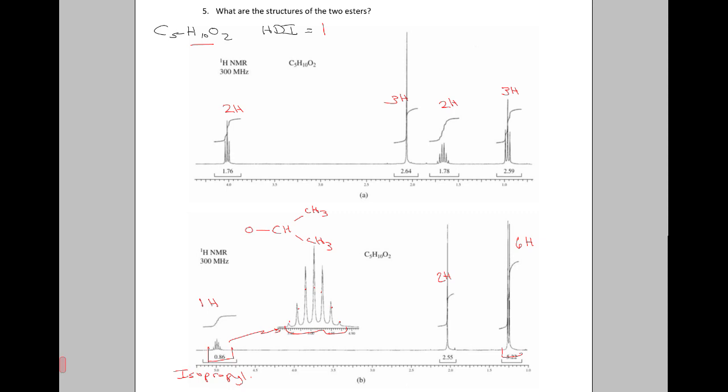If you remember when we looked at estimating chemical shifts for protons, this proton here, that methine, how would we determine that? We'd say, well, a methine we start with 1.7, and since it's next to an oxygen from an ester, we would add 3, which would give us 4.7 ppm, which is very close to the chemical shift that we see in the spectrum.